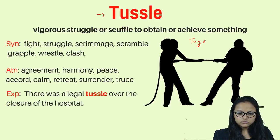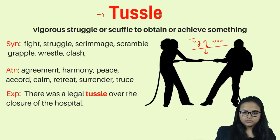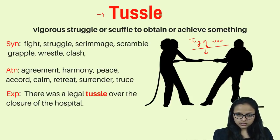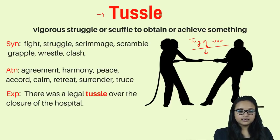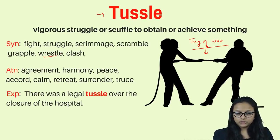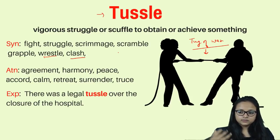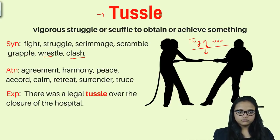The next word is 'tussle.' Have you seen a tug of war? We try to drag the other side to our side to achieve something. Tussle is a vigorous struggle or scuffle to obtain or achieve something — when you are struggling to get something, that is a tussle. Synonyms: fight, struggle, scrimmage, scramble, grapple, wrestle, and clash — all groups clashing to achieve power.